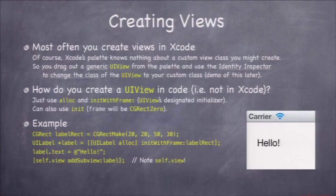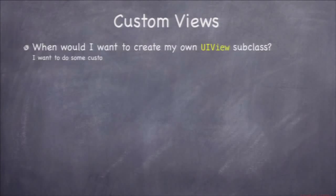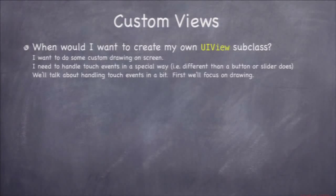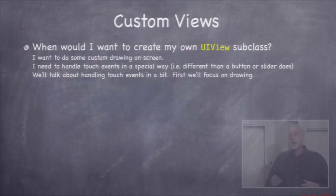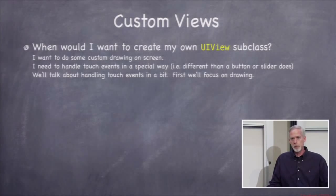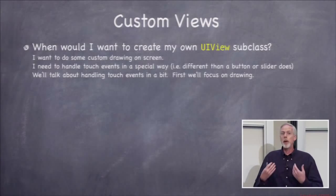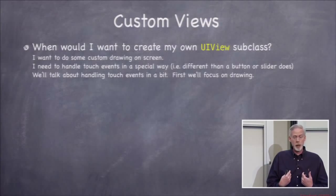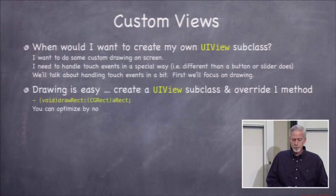You wouldn't normally create a label like this because you drag them out, but you might create your own custom view this way. So when do you want to create your own custom views? Obviously when you want to draw something custom — not something a button or label can draw for you — or when you want to handle special touch events like swipes or pinches.